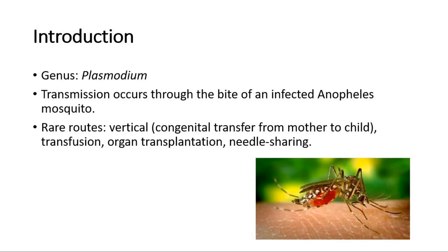Transmission occurs through the bite of an infected Anopheles mosquito, and only female mosquitoes will transmit Plasmodium, as only females require a blood meal for egg development. Transmission in the absence of a mosquito is rare, but some routes include the vertical route, transfusion of blood, organ transplantation, and needle sharing.